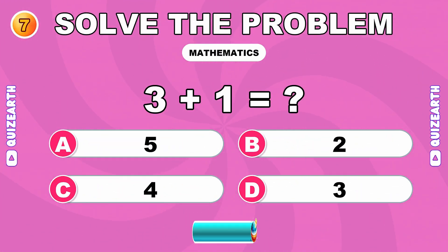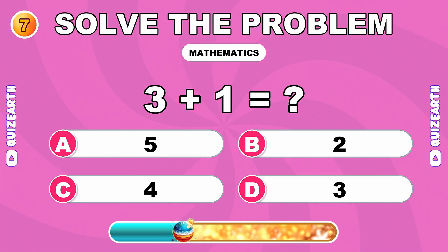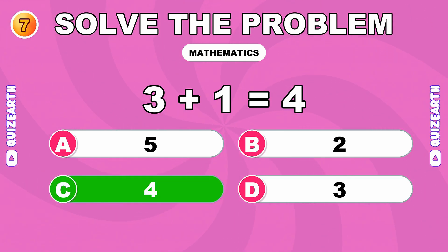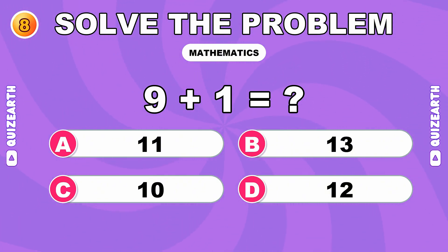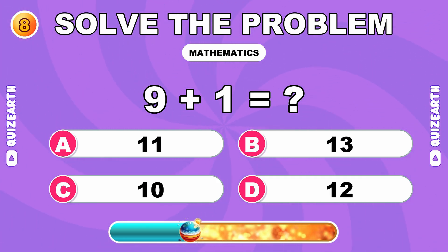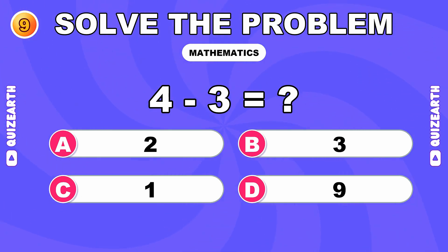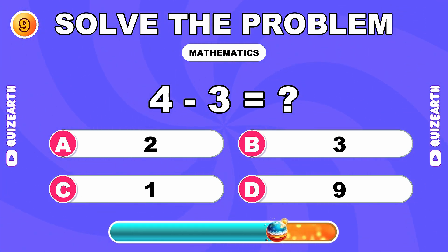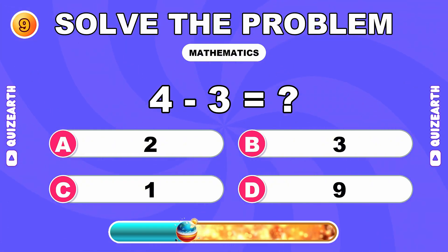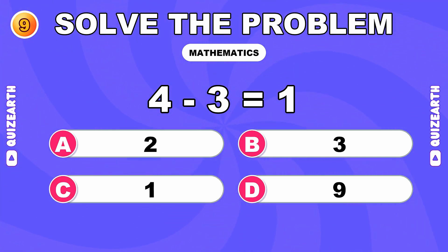How much is 3 plus 1? Keep rolling. The answer is 4. What is 9 plus 1? Classic. The answer is 10. What do you get when you subtract 3 from 4? Too easy for you. The answer is 1.